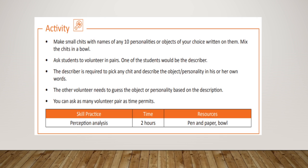Mix the chits in a bowl and ask students to volunteer in pairs. One student would describe the object or personality in his or her own words, and the other volunteer needs to guess the object or personality based on the description.